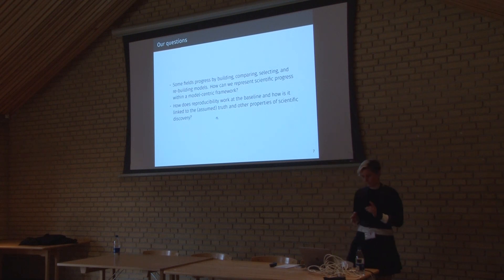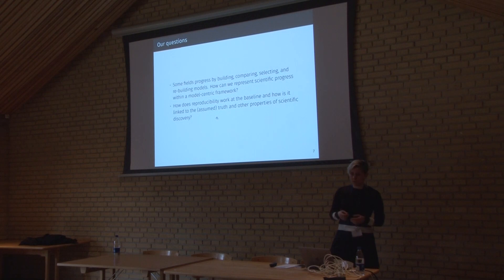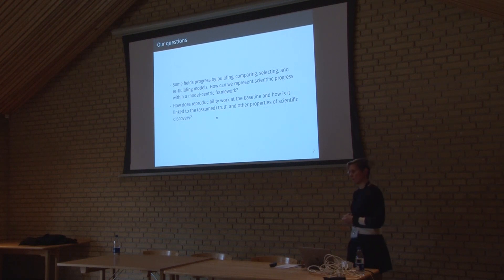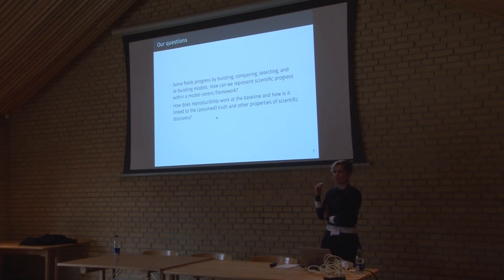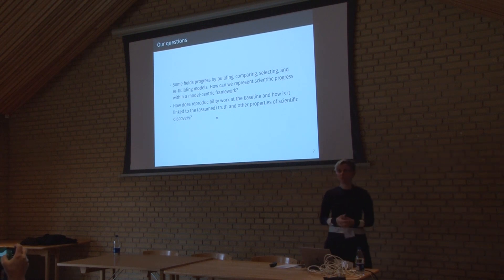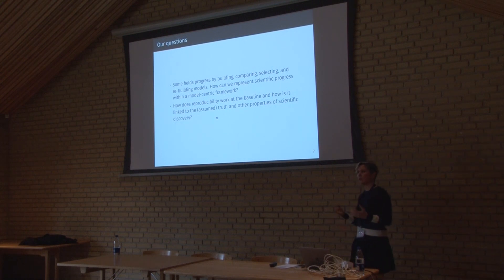Our view is that some fields actually progress by building models, developing new models, comparing models, selecting models, and rebuilding them. So how can we represent the scientific process in a framework where we can adopt this model-centric perspective? Another thing we want to understand is how reproducibility operates at the baseline, before even these methodological issues. If there were no p-hacking, no HARKing, no publication bias at all — would we have solved all the problems? We want to understand what kind of reproducibility we should expect if none of these issues exist.